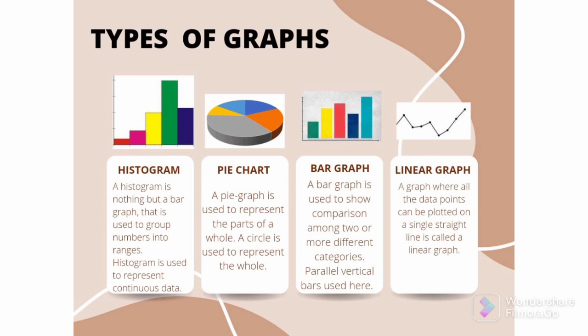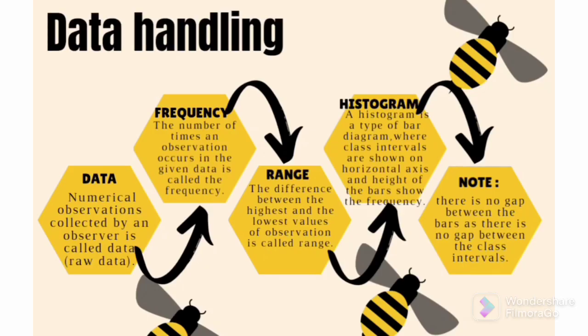Now let us try to learn the terminology of data handling. Data: numerical observations collected by an observer is called data or it is also known as raw data. Frequency: the number of times an observation occurs in the given data is called the frequency. Range: the difference between the highest and the lowest value of an observation is called range. Histogram: a histogram is a type of bar diagram where class intervals are shown on horizontal axis and height of the bars show the frequency.